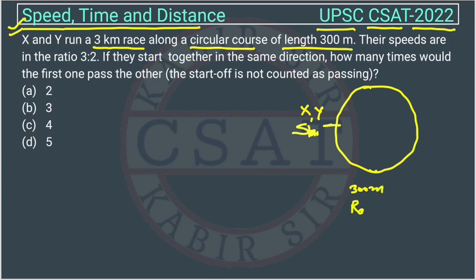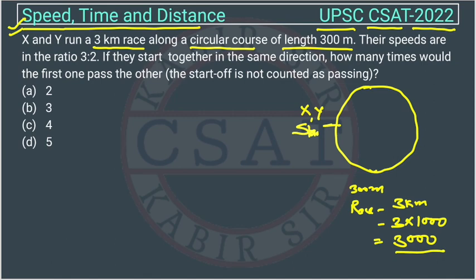The race is 3 kilometers. In 1 kilometer we have 1000 meters, so this becomes 3 into 1000 = 3000 meters. How many rounds? One round is 300 meters, so the number of rounds will be 3000 divided by 300, which equals 10 rounds.